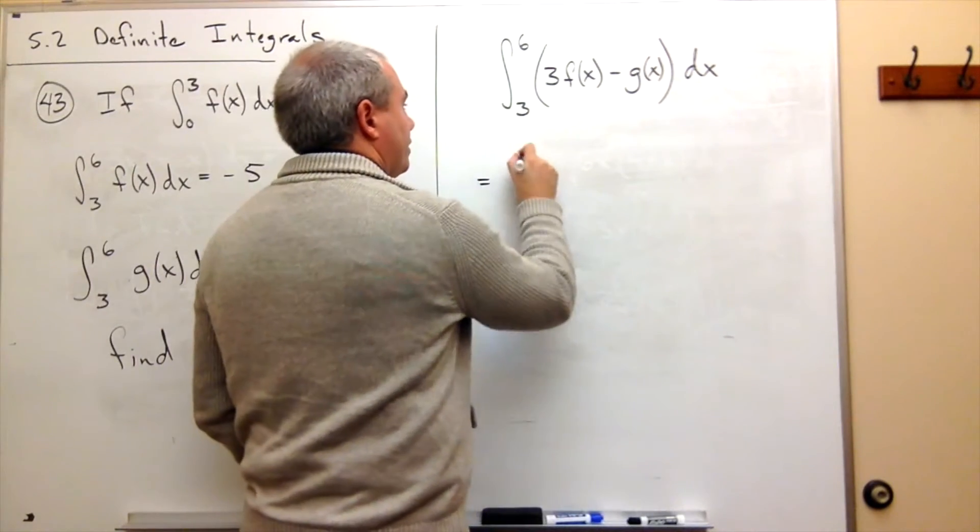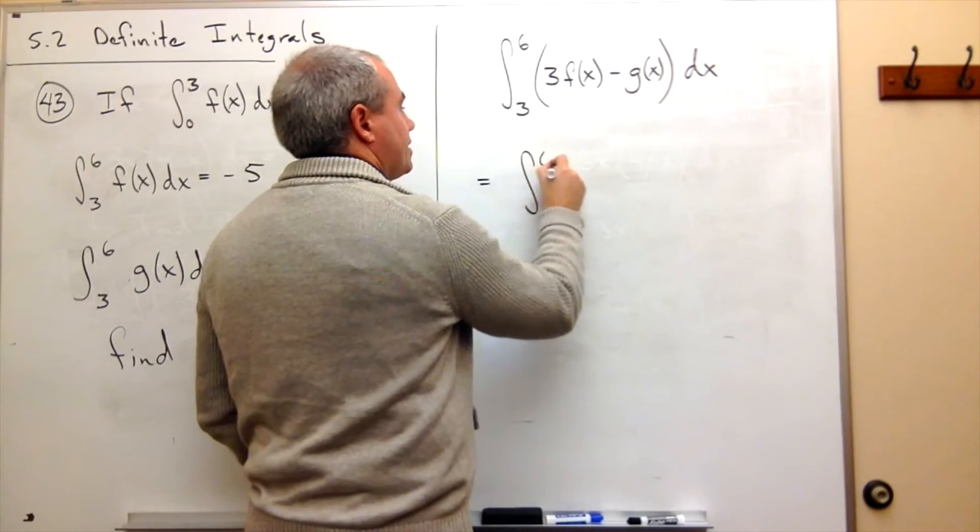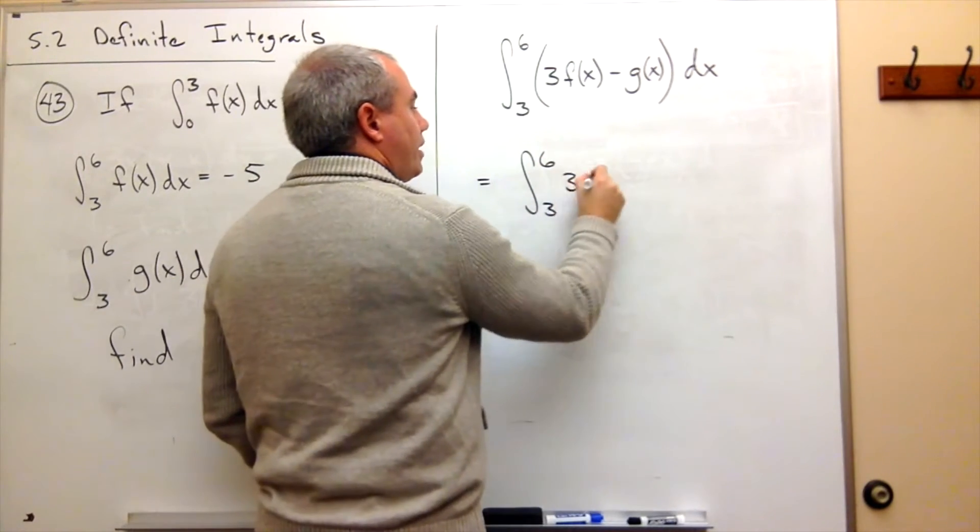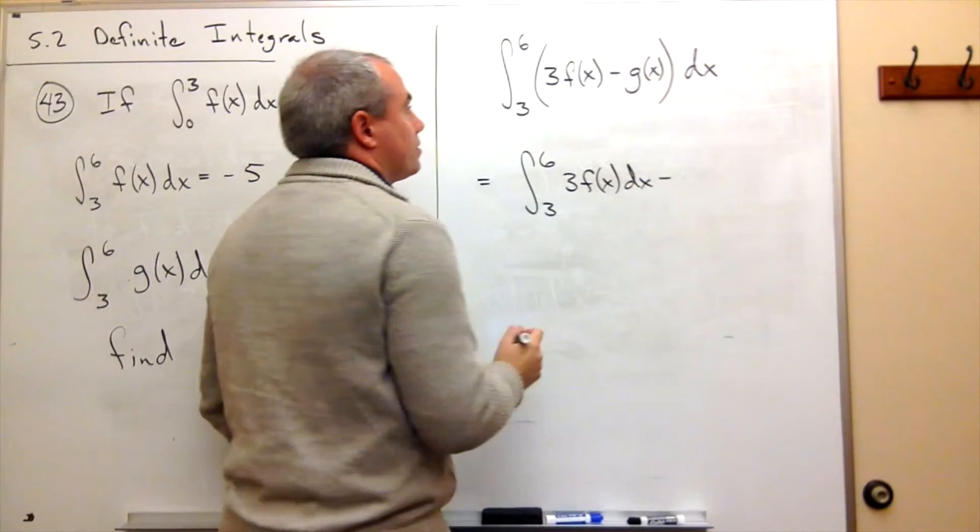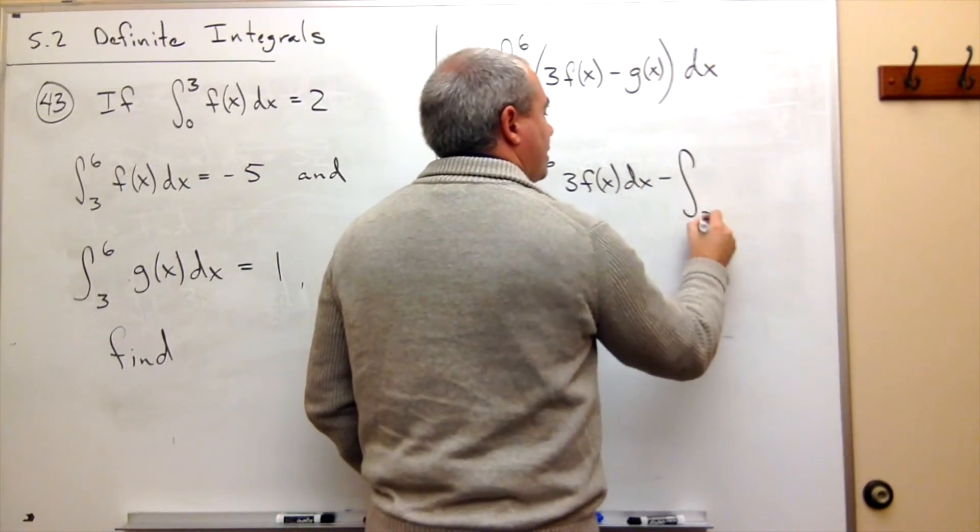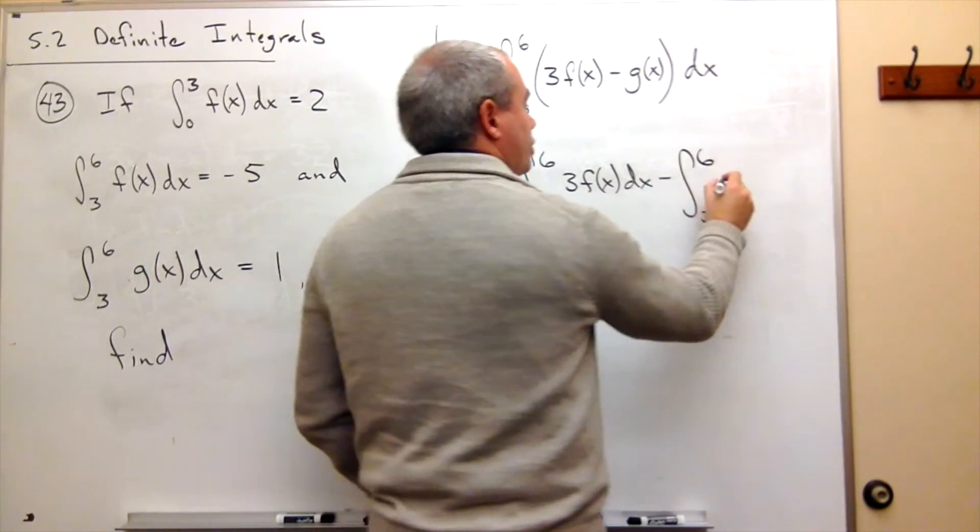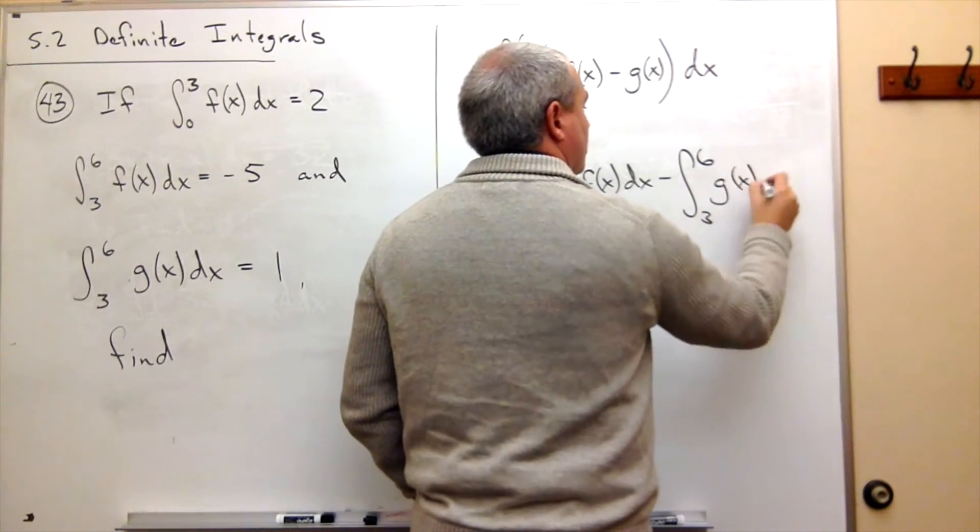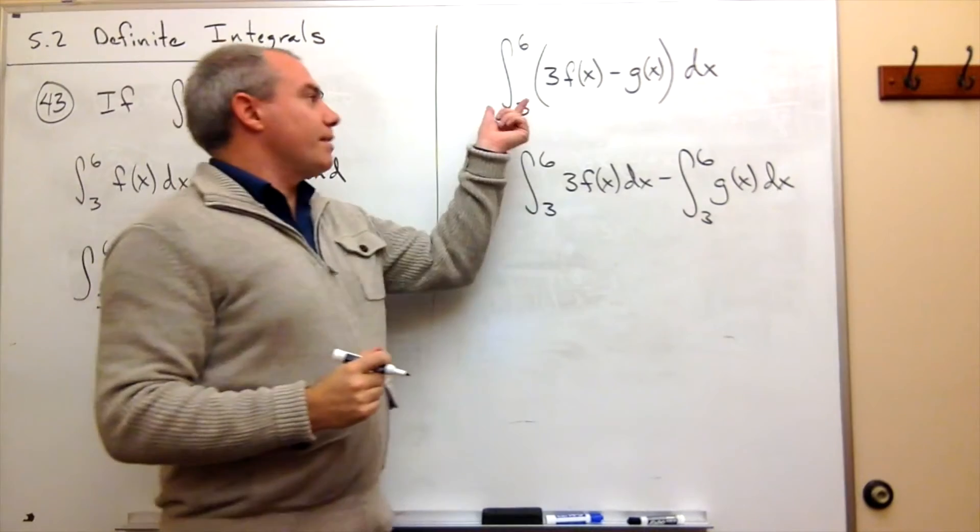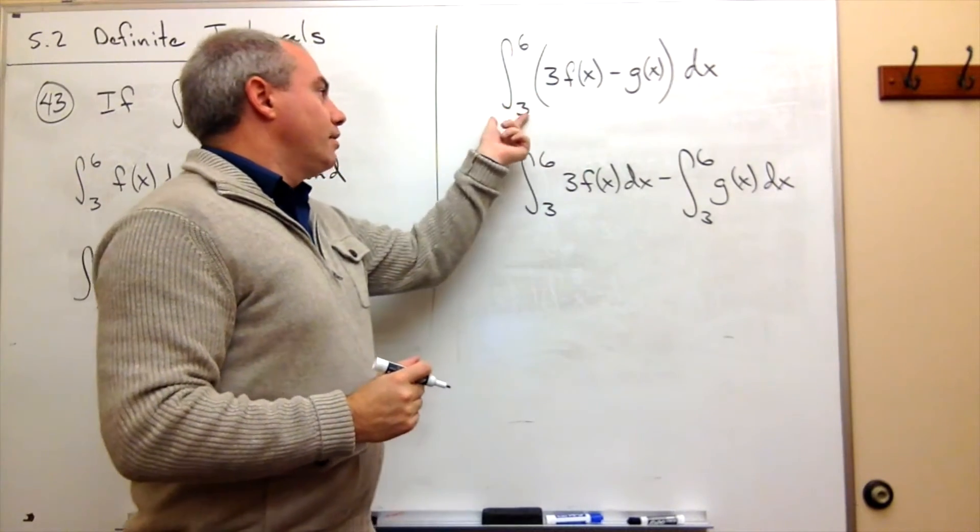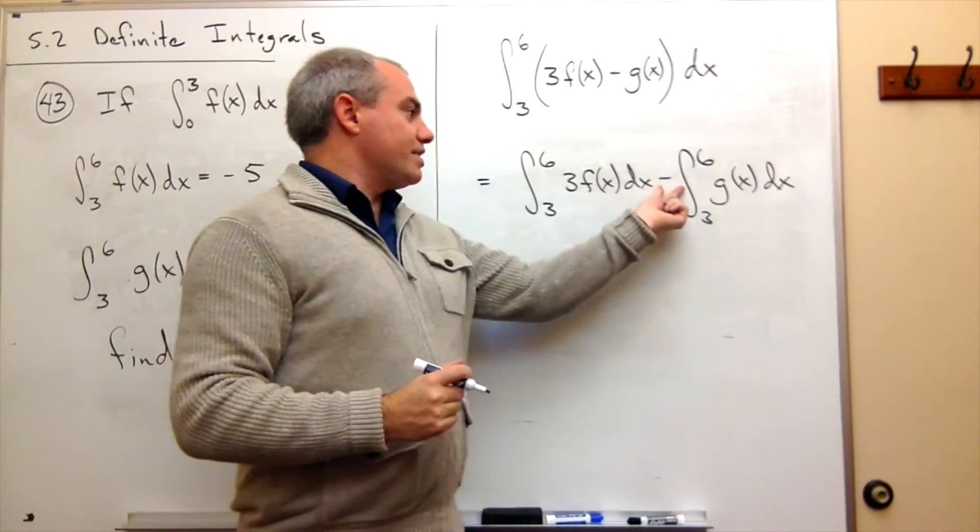What I could write is the following: this is the integral from 3 to 6 of 3 f of x dx minus the integral from 3 to 6 of g of x dx. So I was able to break that integral up over this difference.